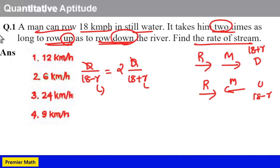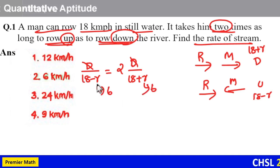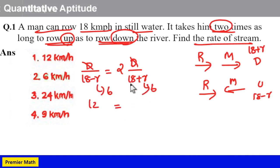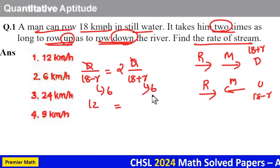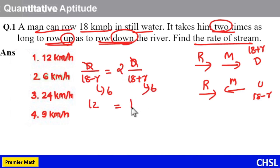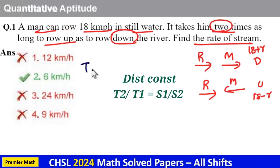Check option 2: put r as 6. Now 18 minus 6 equals 12, so we get 1 by 12. Here 18 plus 6 equals 24, so 2 by 24 equals 1 by 12. The equation is satisfied, so option 2, r equals 6, is the answer.